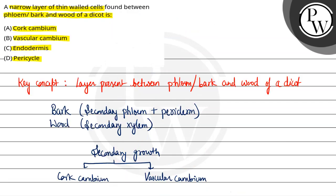So now let's see our question: a narrow layer of thin wall cells found between the phloem and the wood of a dicot is? First option is cork cambium — cork cambium is present between cork and secondary cortex, so that is incorrect. Second one is vascular cambium — vascular cambium is present between the secondary phloem and the secondary xylem, that is wood — so this option is correct.